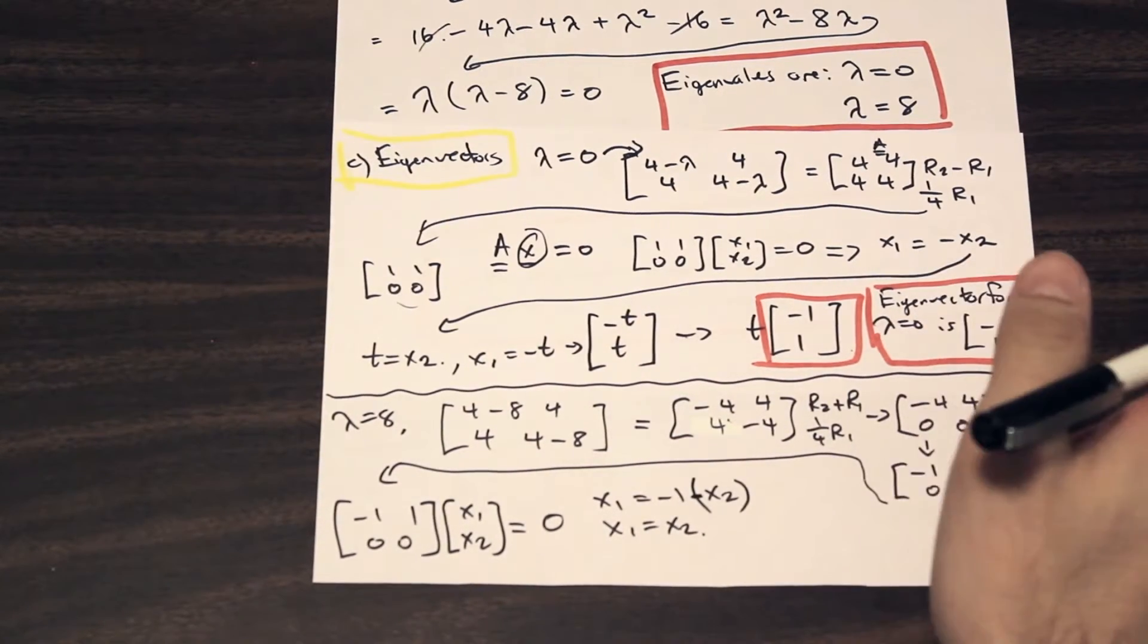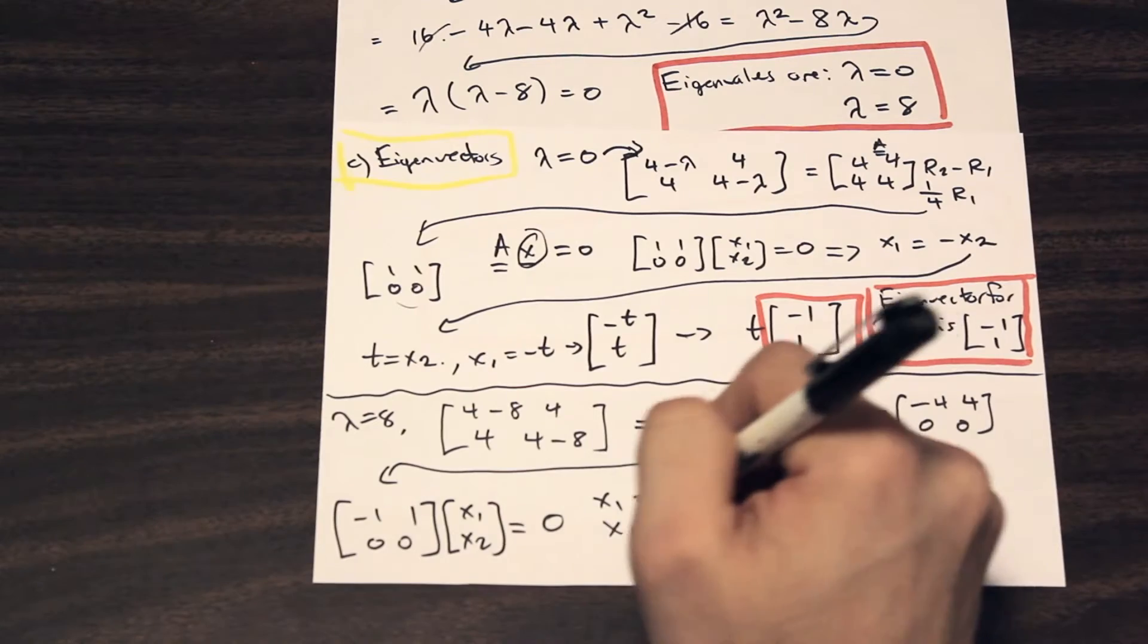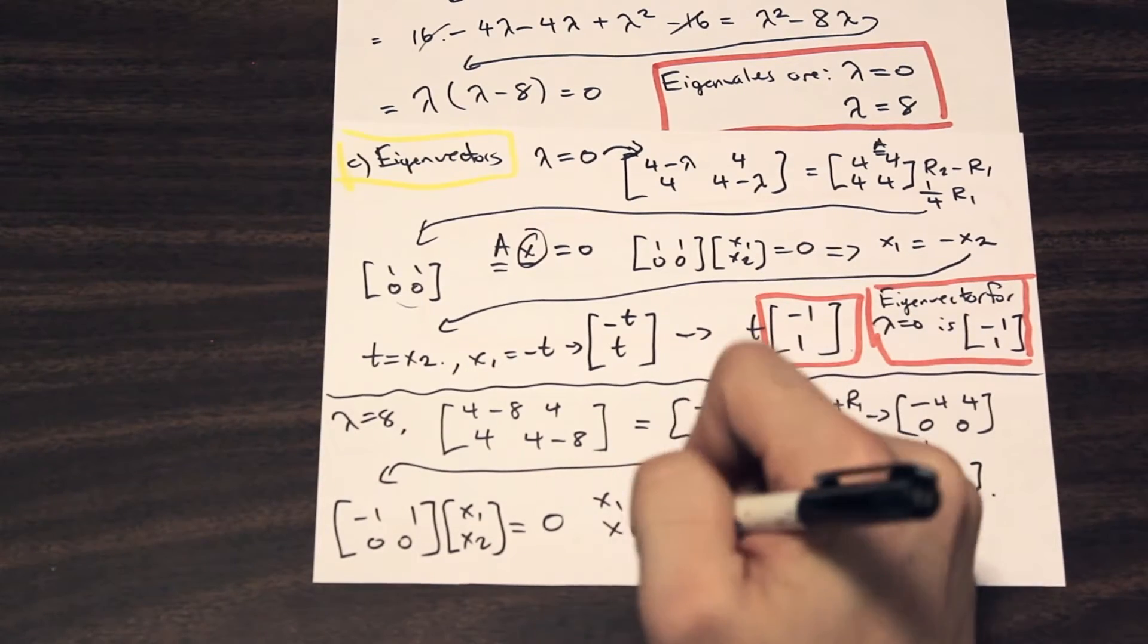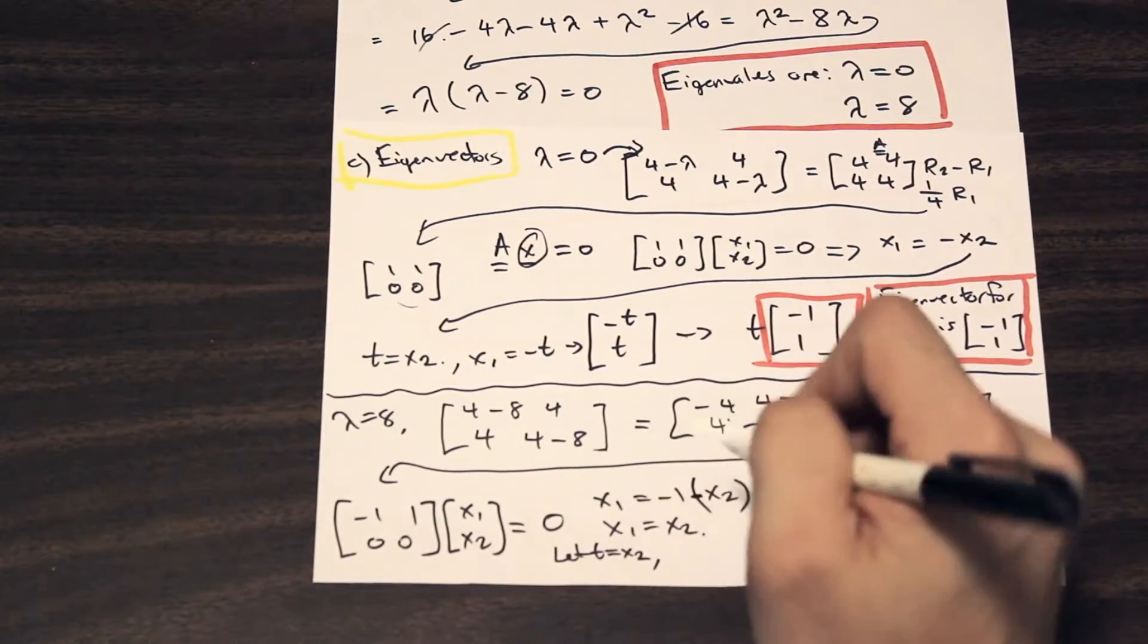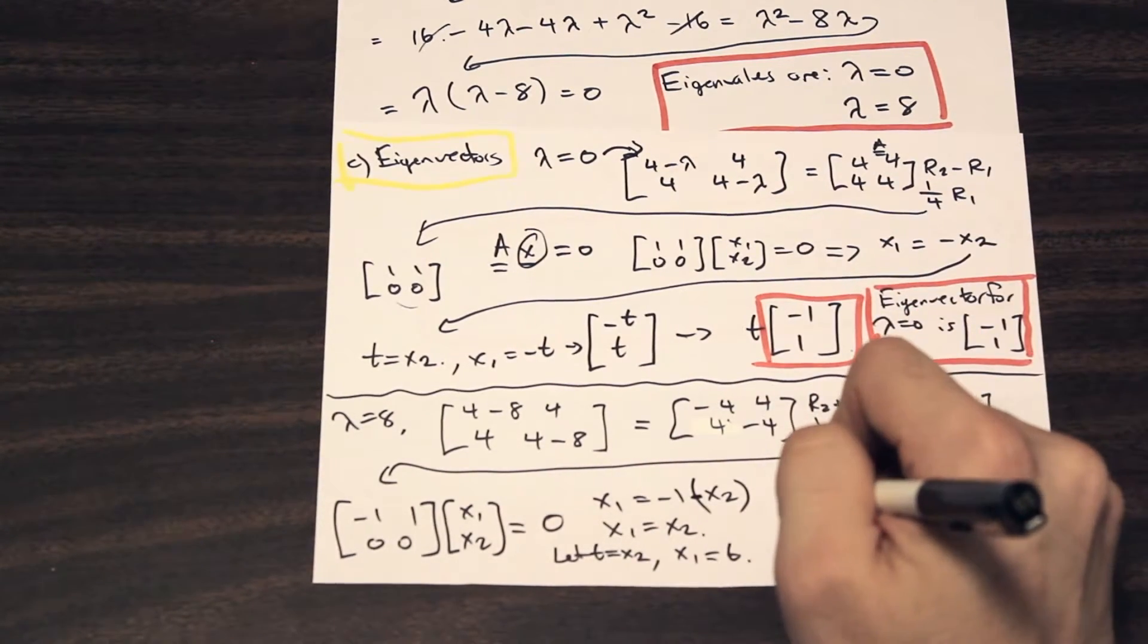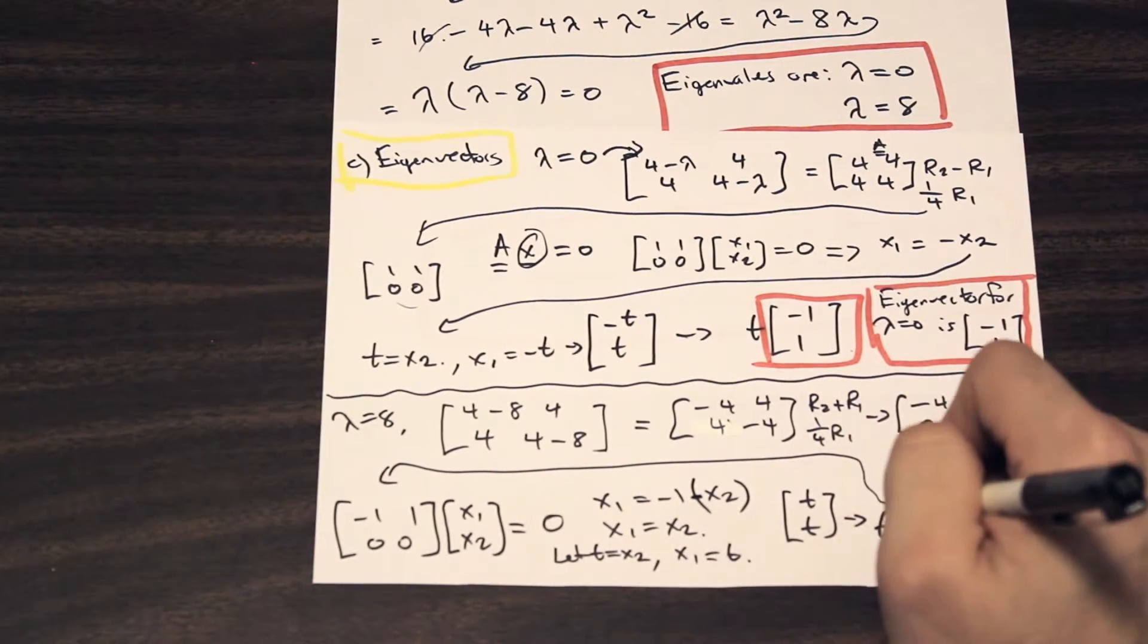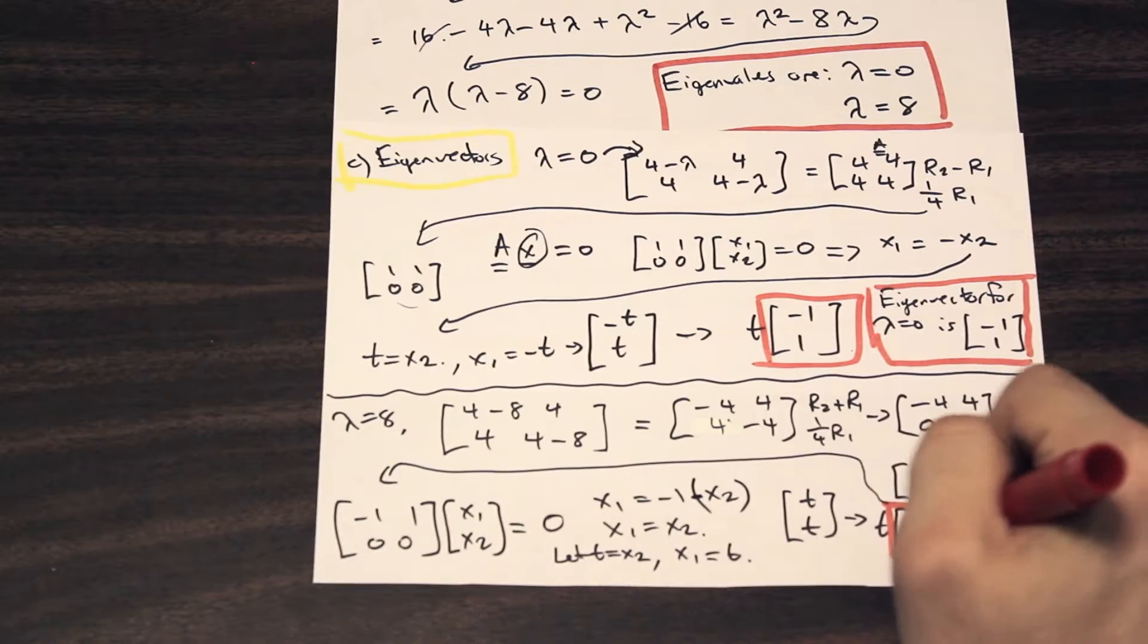So if we do the same thing for t that we did before, as you can see here, x1 is equal to x2. So any number would satisfy this equation - 1, 2, 3, 4, 10, a million, anything that we put into x1 would equal x2, as long as they're the same. So we can say that t is equal to x2. And when x2 is t, obviously x1 is t. That makes sense, because they're equal to each other. So we'll create our matrix of t's here, and we'll factor out a t, and there's our eigenvector, 1, 1.